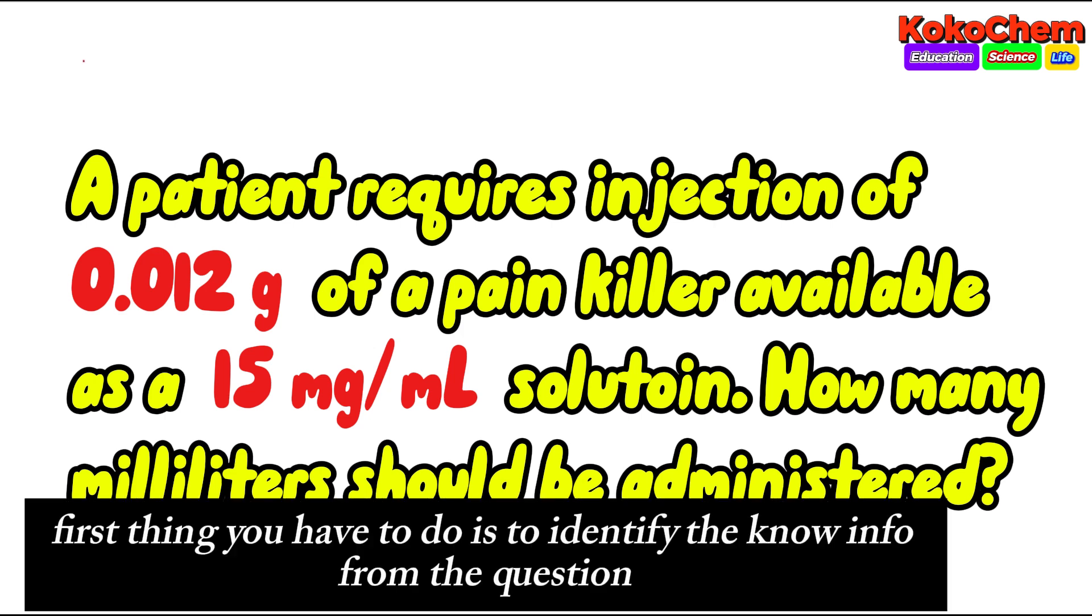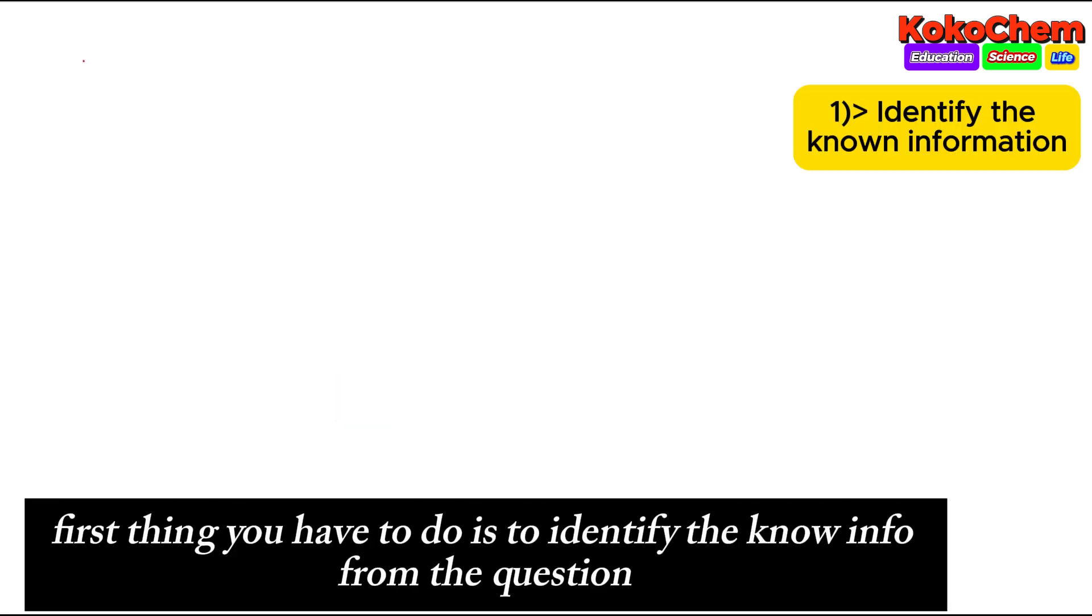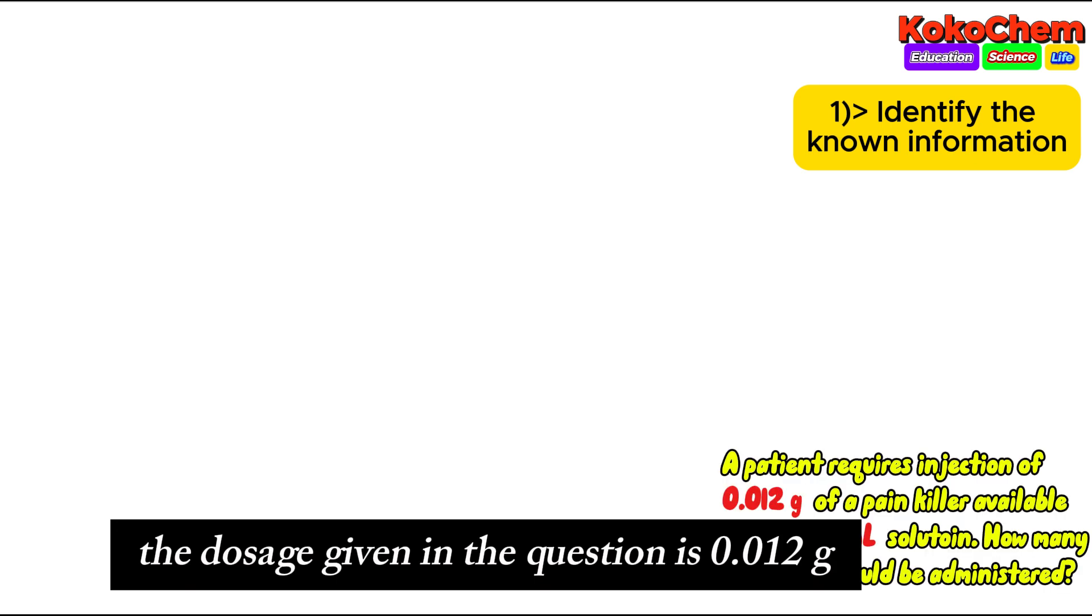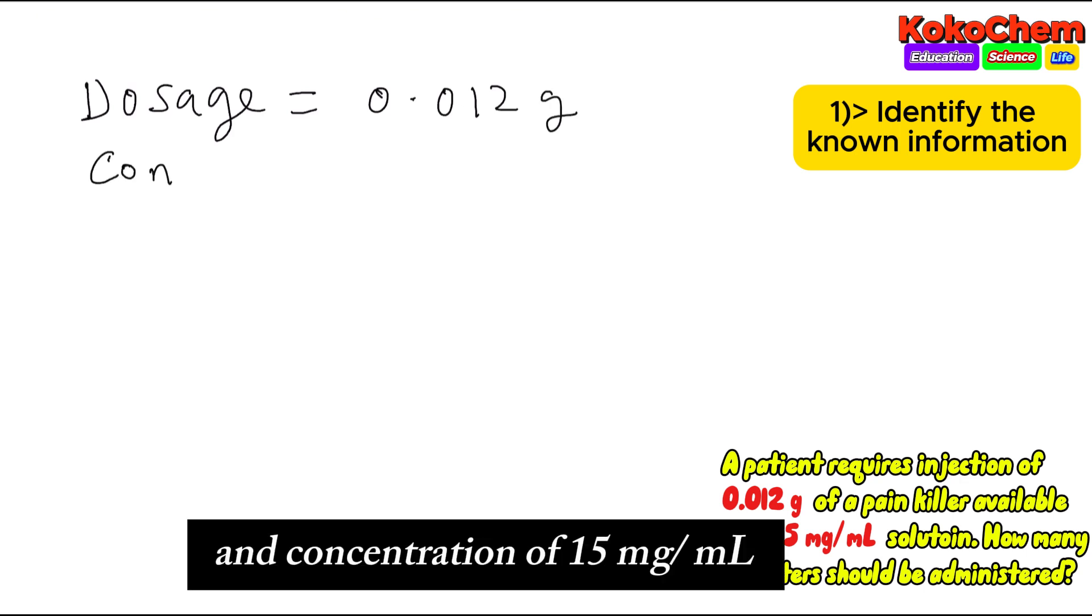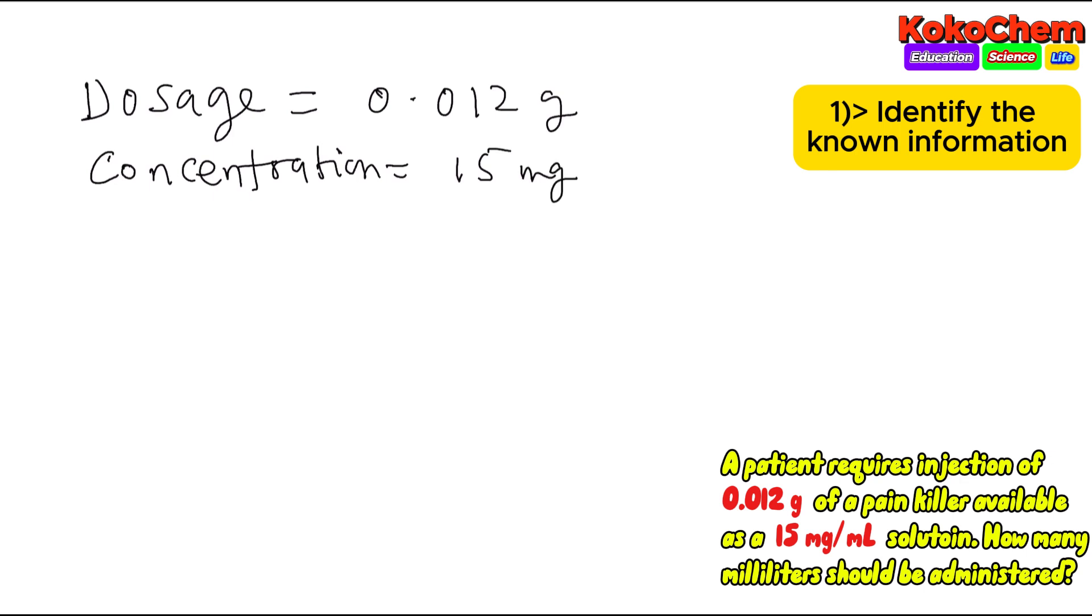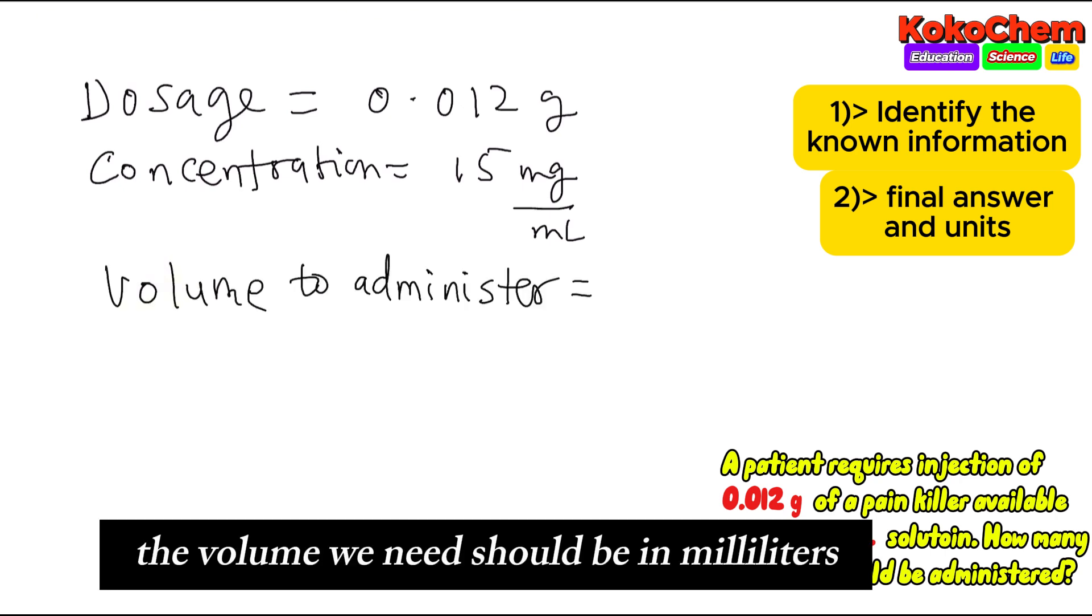First thing I will show you is step one: identify the known information. The dosage is 0.012 grams and the concentration is 15 milligram per mL. Step two: identify the answer and unit. The question asks how many milliliters should be administered, so the answer will be volume in milliliters.